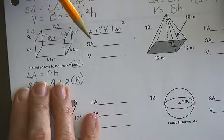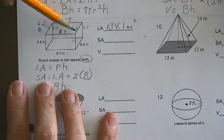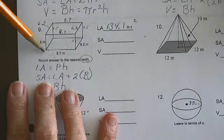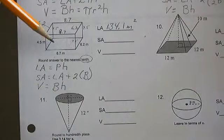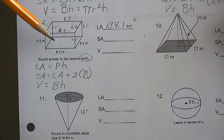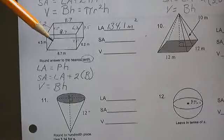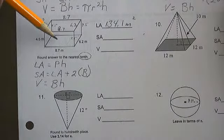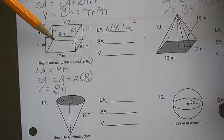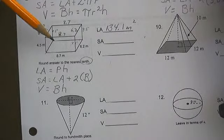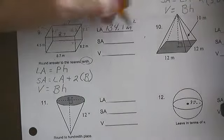My total surface area is my lateral area plus my top and bottom. They have the same area, so 8.7 times 6.2, 53.94 times 2, 107.88 which is 107.9 roughly.